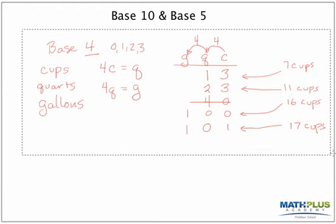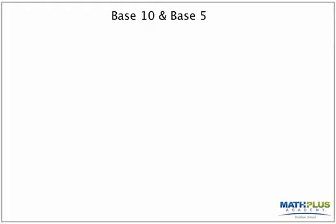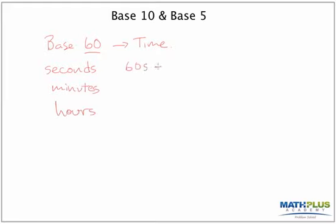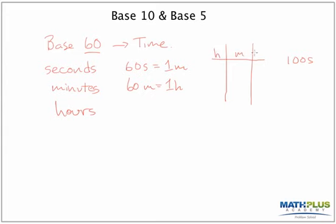Another base we use in everyday life is base sixty. Can you think of where the number sixty gets used every single day? It gets used when we talk about time: there are seconds, minutes, and hours. Sixty seconds equals a minute, and sixty minutes equals an hour — so this is base sixty. If I had a hundred seconds and wanted to convert to hours, minutes, and seconds, I'd group on sixty: there's one sixty, with forty left over — so that's one minute and forty seconds.